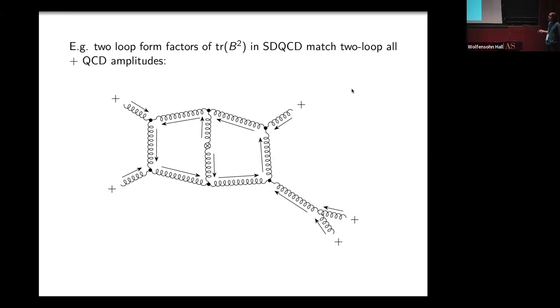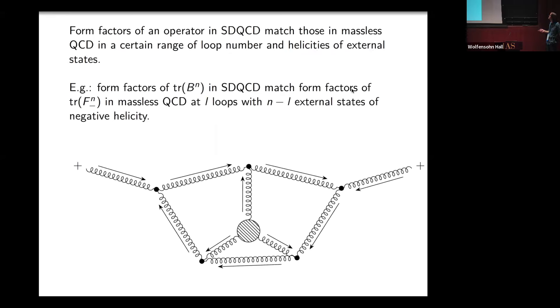Diagrams like this compute the form factors of trace B squared in the self-dual theory, but they also compute the two-loop all-plus amplitudes in ordinary QCD. This is because adding this trace B squared is what deforms me from the self-dual theory to the full theory. If I added a more complicated vertex, like trace B to the N, then the self-dual theory knows about things at higher loop orders.